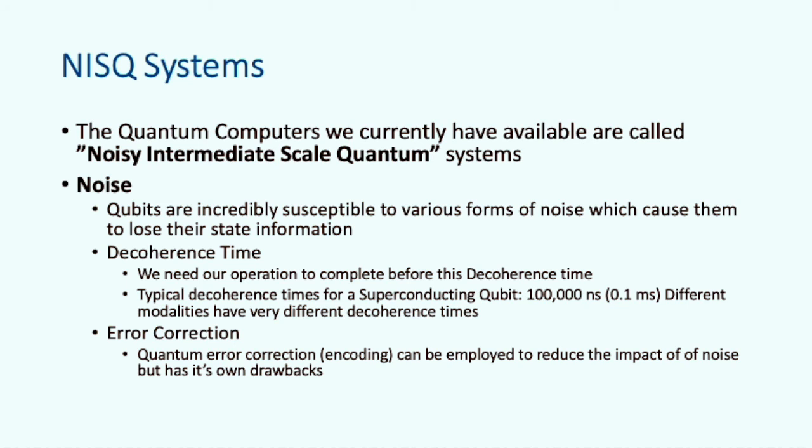The current systems we have access to are called NISQ systems. Noisy intermediate scale quantum. In the first part of our presentation, we looked at an IBM quantum computer and saw that it had to be cooled to near absolute zero to isolate it from noise. By noise, we mean thermal noise or other forms of energy that will disrupt or change the state of the qubit. With the best technology we have available now, we can only maintain the qubit state for a very short time. For example, the time that a typical superconducting qubit can maintain accurate state is just 0.1 milliseconds. Quantum error correction can be applied to reduce the impact of noise, but it has drawbacks of requiring many additional qubits.